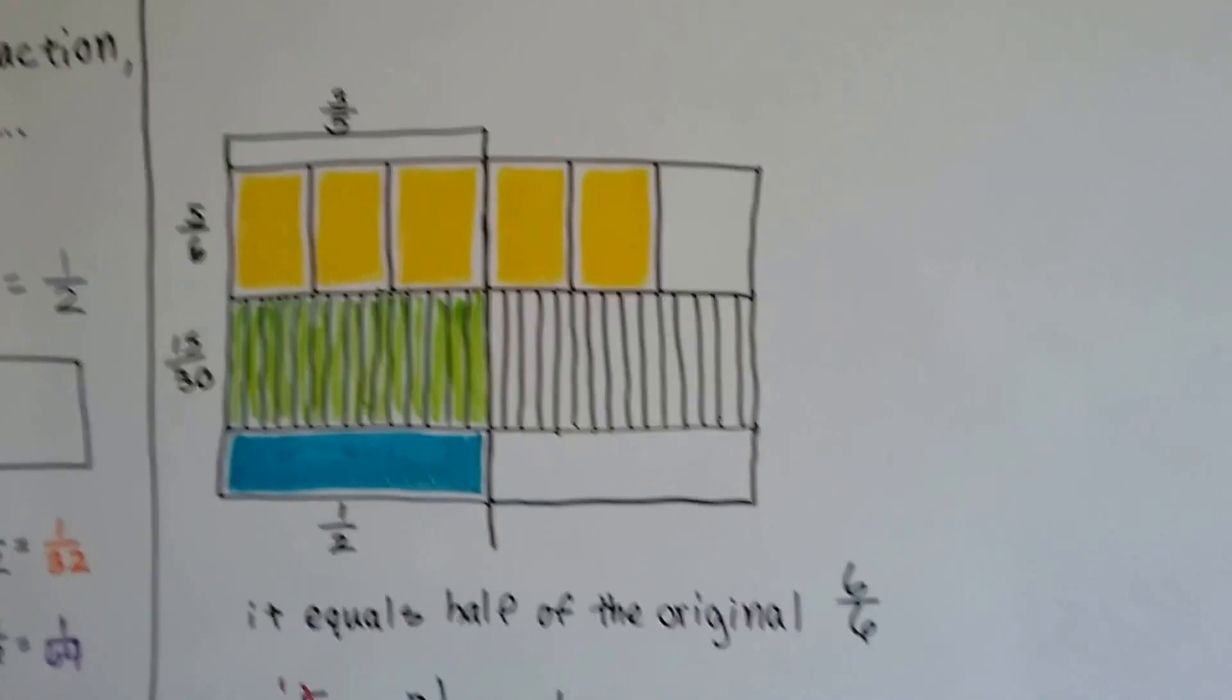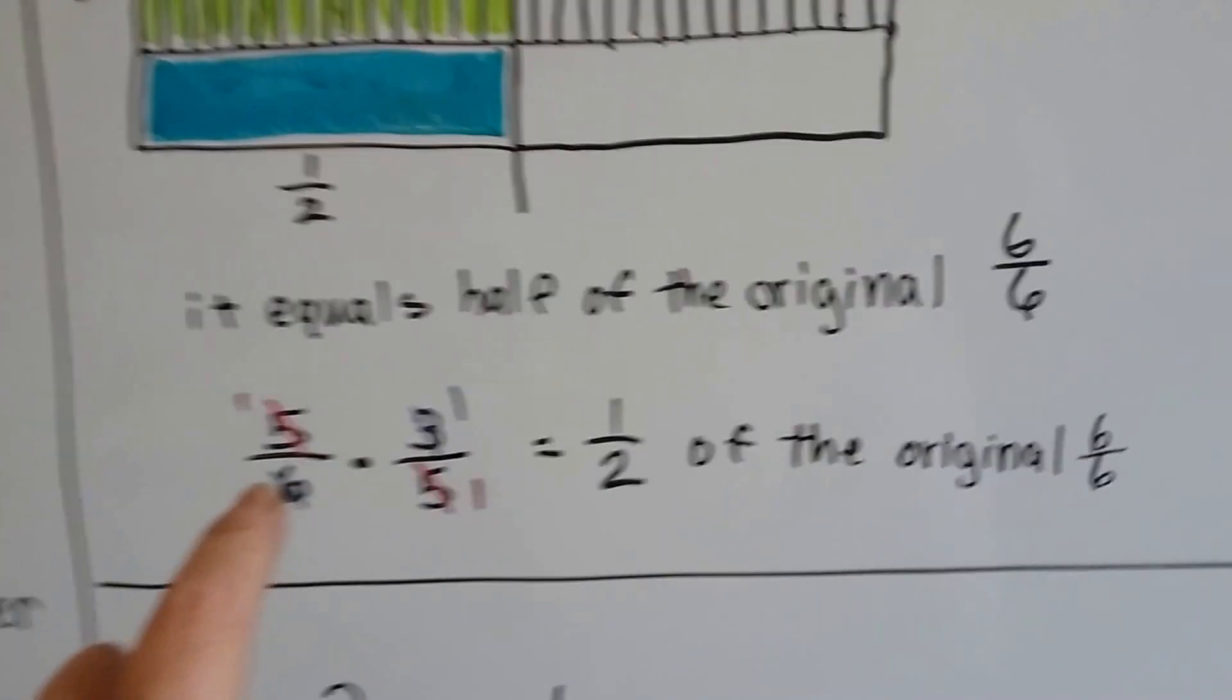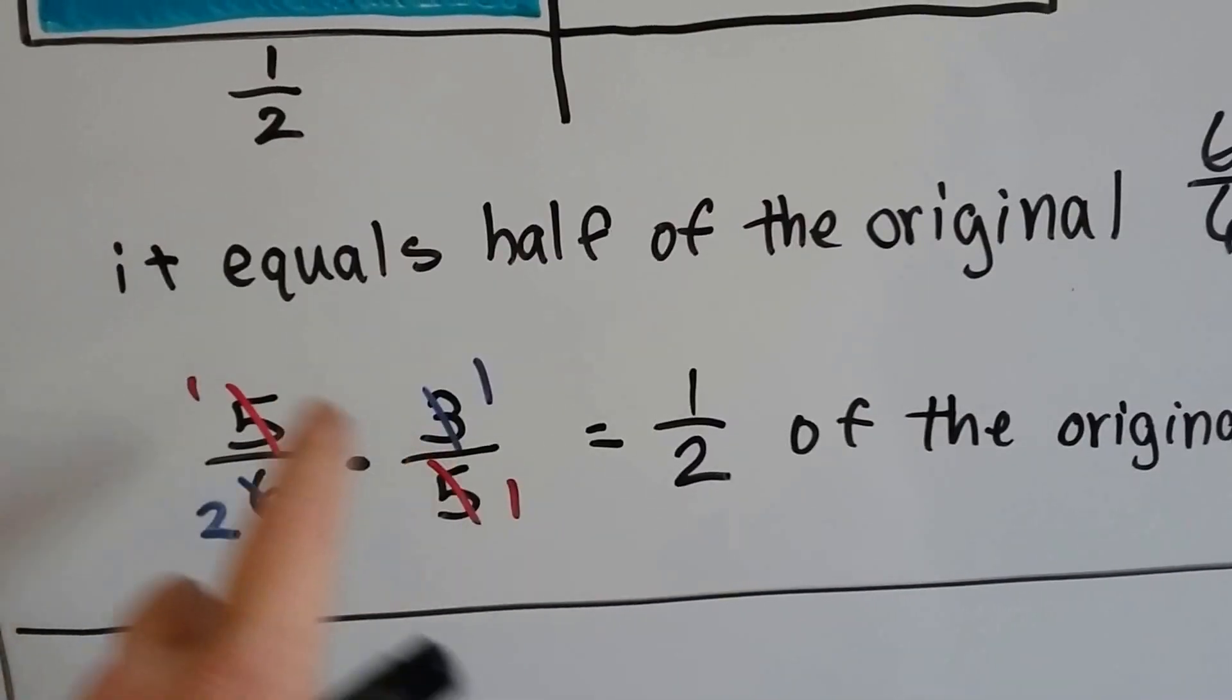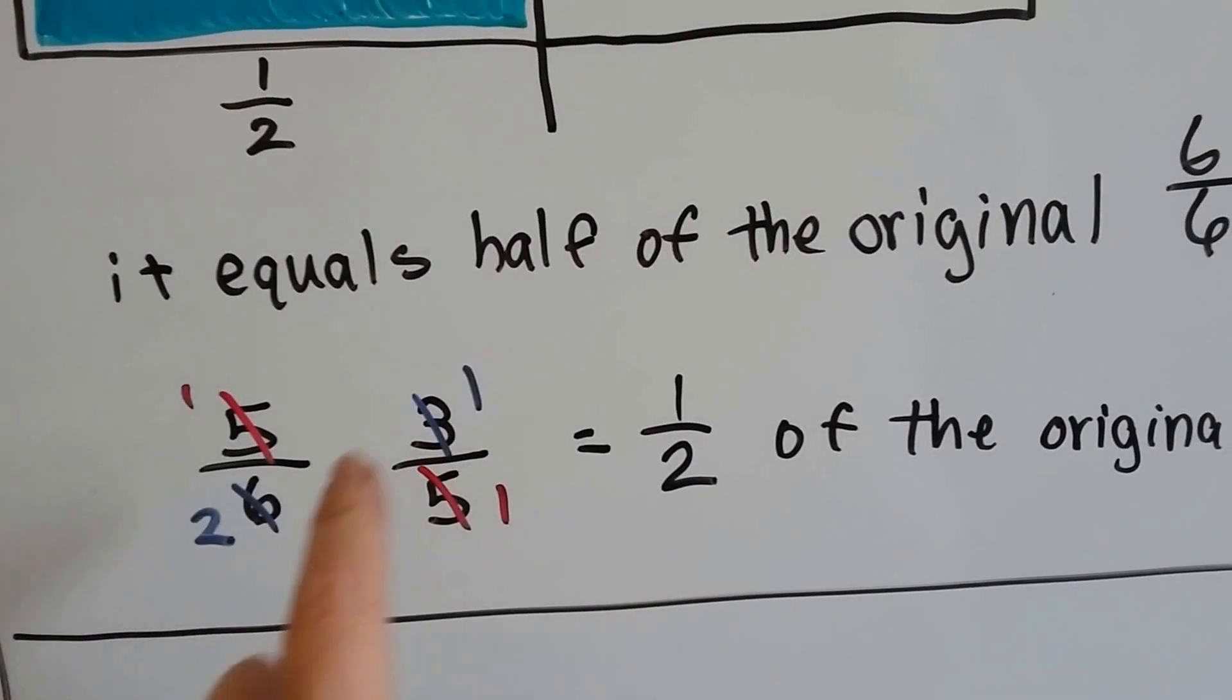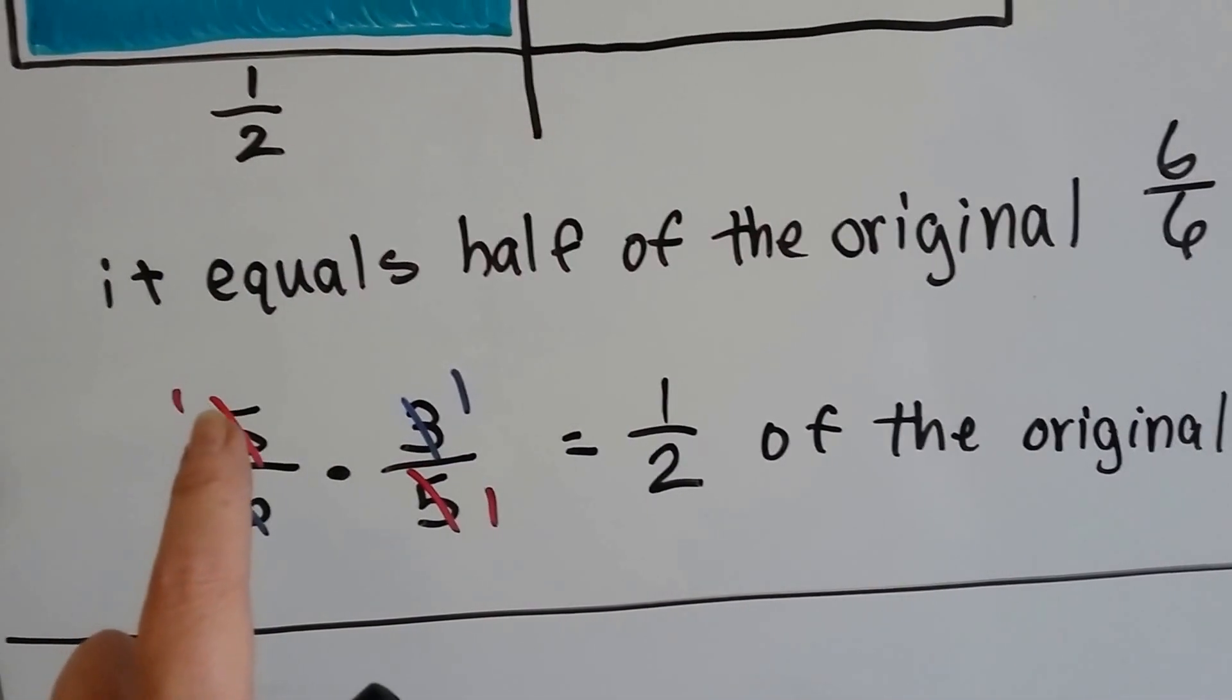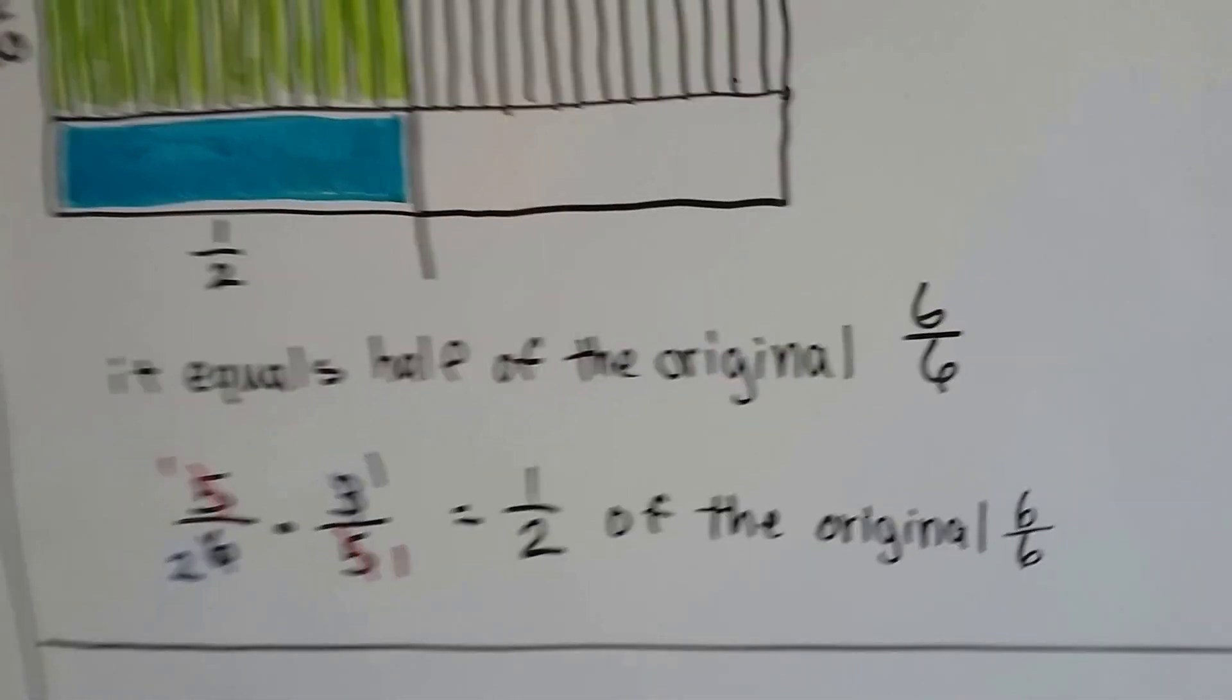Which in the end is equal to half of the original 6/6, and that is why the answer is a half. If we canceled out, the fives would have canceled each other out and become ones, and the three and the six would have canceled out and become a one and a two, and we would have had 1 times 1 is 1 and 2 times 1 is 2, and we would have had a half right away.